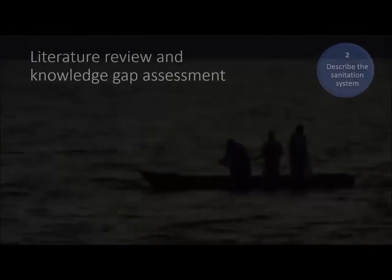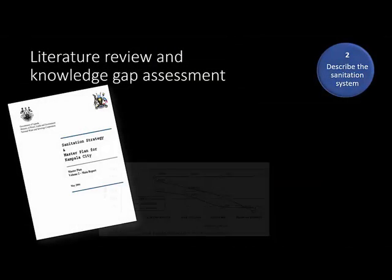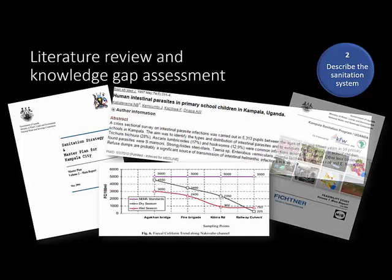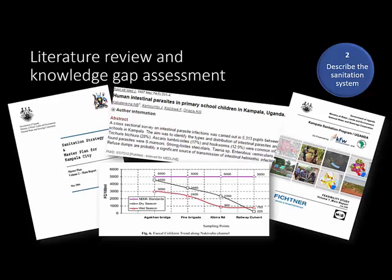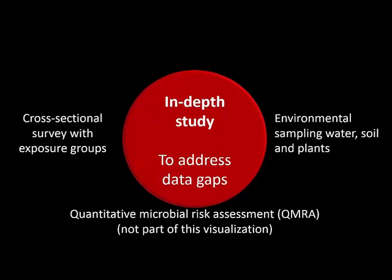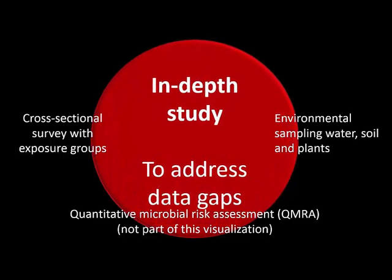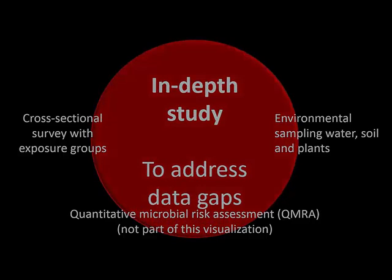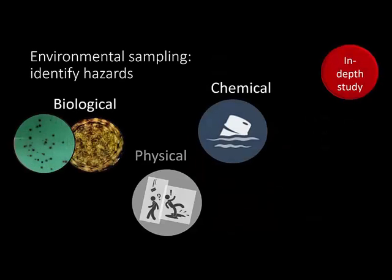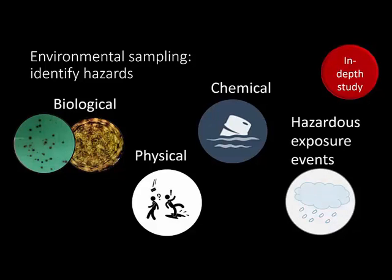After describing the system, the team looked into the literature and assessed knowledge gaps. They assessed sanitation strategies and master plans for Kampala City, and consulted peer-reviewed literature. Data on water and soil-related diseases and on chemical pollutants was severely lacking. Thus, a cross-sectional survey and environmental sampling were carried out in late 2013. For environmental sampling, the team investigated a broad range of microbial and chemical pollutants and heavy metals to better characterize the risk profiles of different exposure groups.